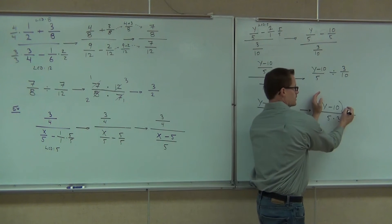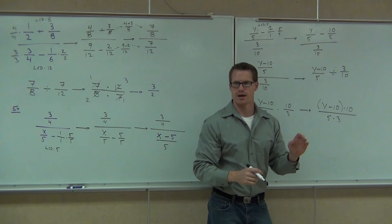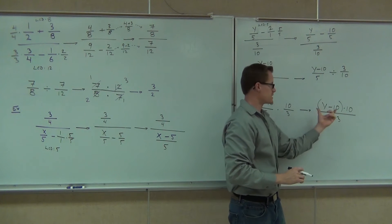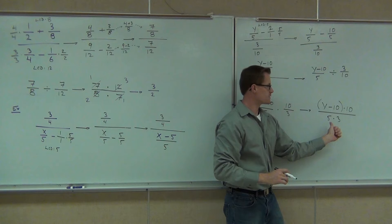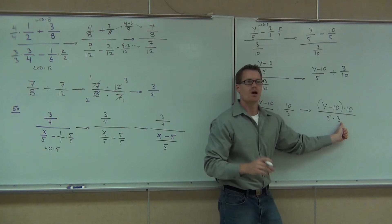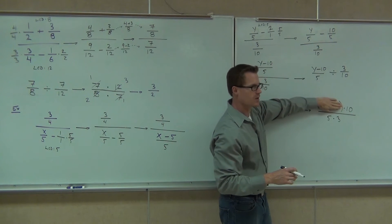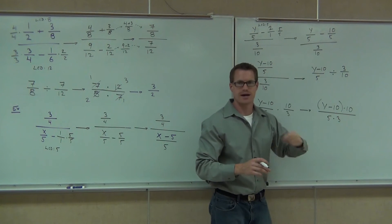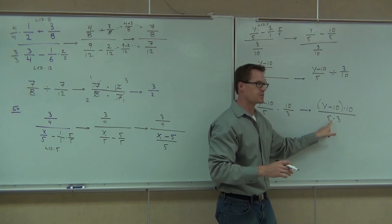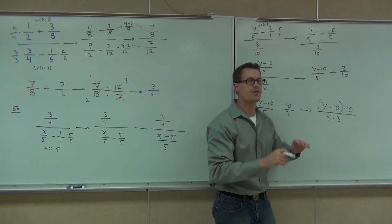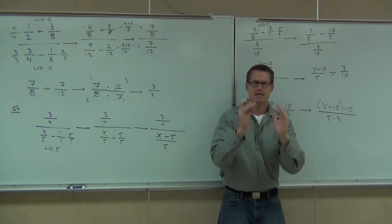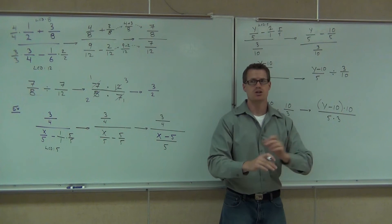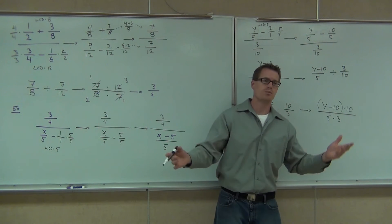But what's awesome about this problem is that when we have those parentheses, this entire expression is being multiplied by that 10, and this 5 is being multiplied by that 3. What that means is that where I cannot cancel anything inside the expression, I can simplify the 10 with the 5 — because this is being multiplied, and that's being multiplied. That's why we need those parentheses. If you don't have the parentheses, you cannot do this. If you do have the parentheses, no problem — you can do that.